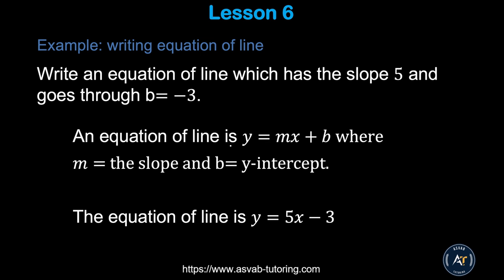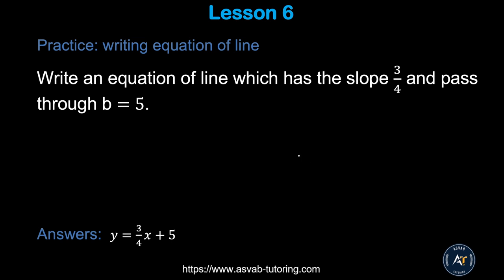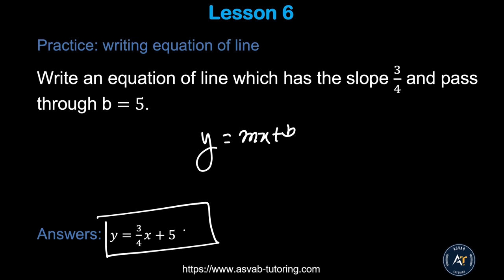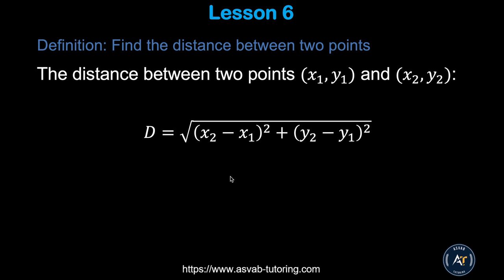Next, we'll learn how to write the equation of a line using slope and y-intercept. The equation of a line is y = mx + b, where m is the slope and b is the y-intercept. Plug in slope m = 5 and b = −3, and you get y = 5x − 3. Now you try: use y = mx + b and make sure you get y = (3/4)x + 5.